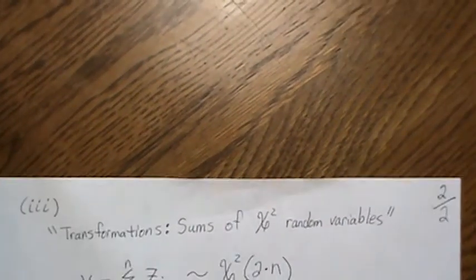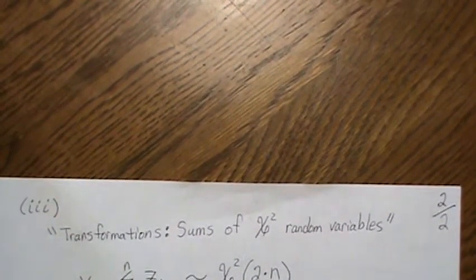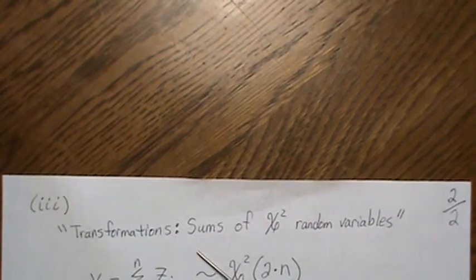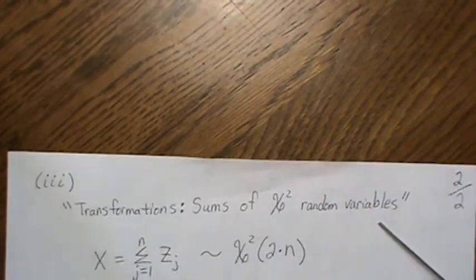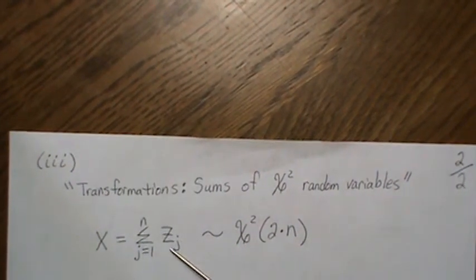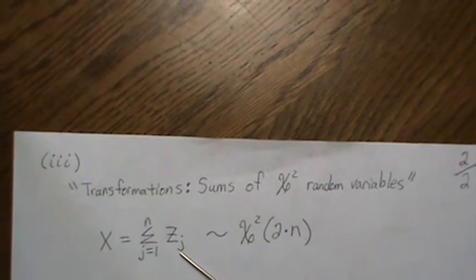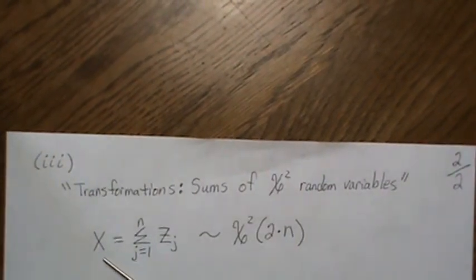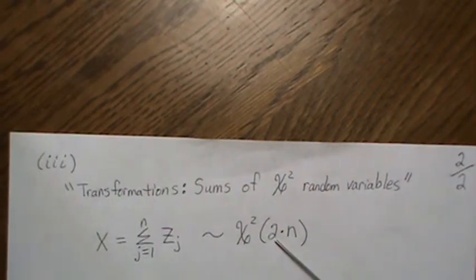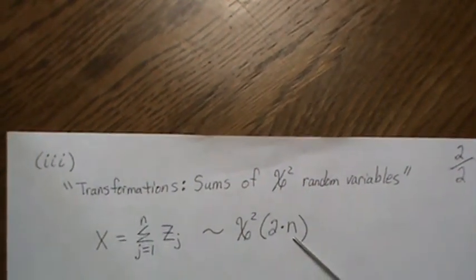So now I have a video that's called Transformations Sums of Chi Square Random Variables where I show that if we sum chi-squared random variables with 2 degrees of freedom, the resulting distribution, say X, is a chi-squared with 2 times n degrees of freedom.